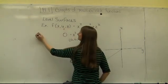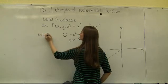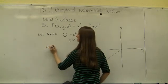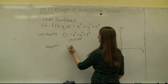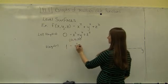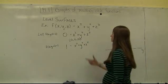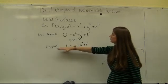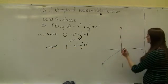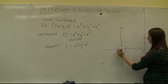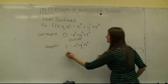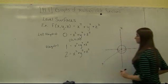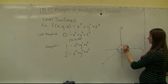When I let f(x, y, z) = 1, I get 1 = x² + y² + z², which is a sphere of radius 1. When I set f(x, y, z) = 2, I get 2 = x² + y² + z², which gives a level surface of radius √2. Continuing this pattern produces a series of nested spheres.